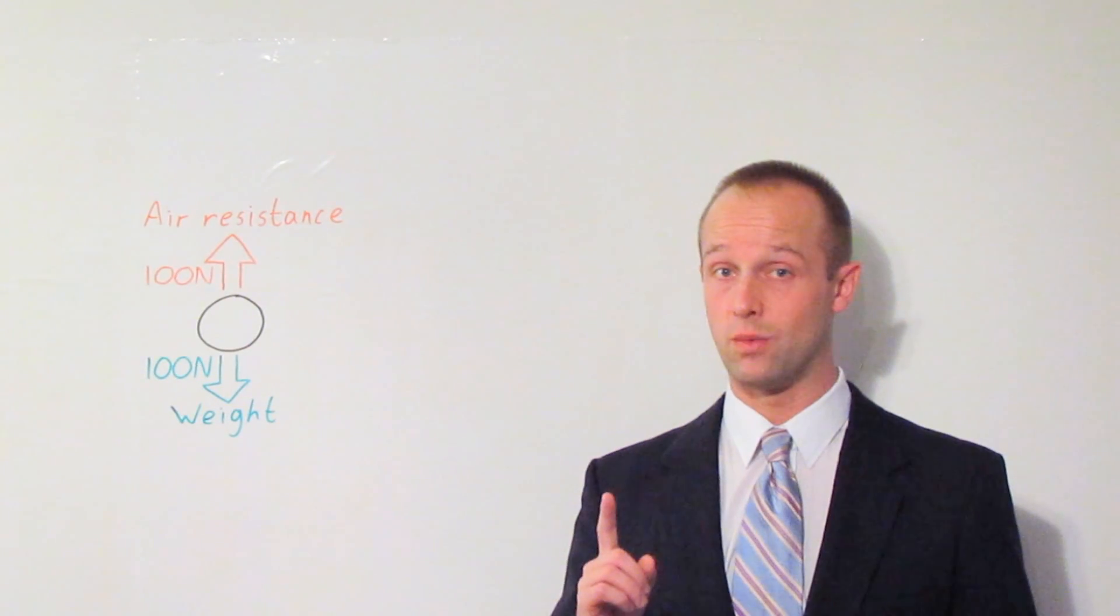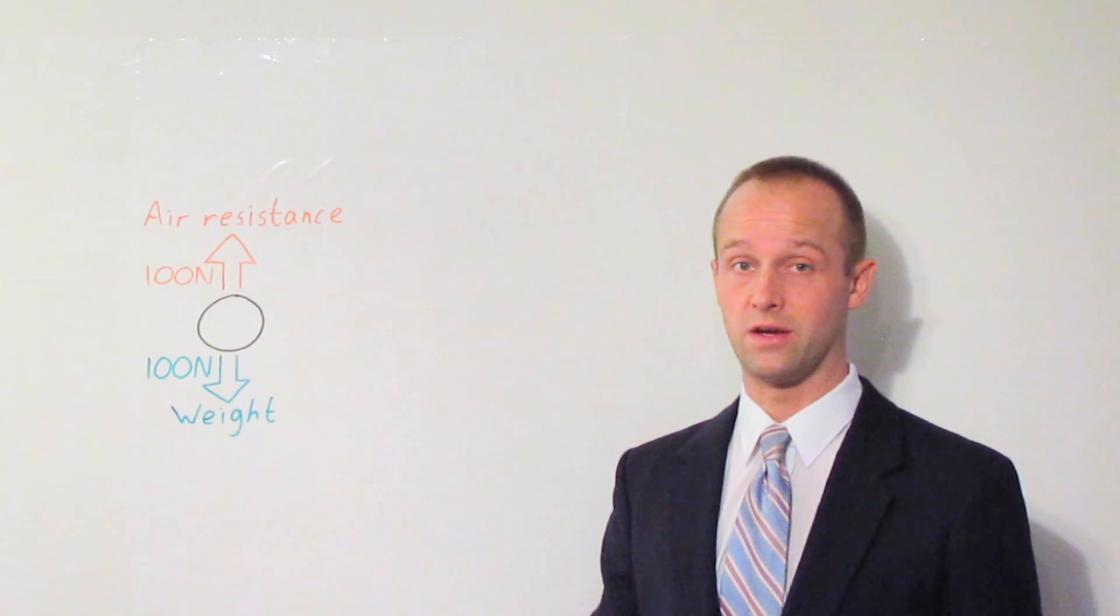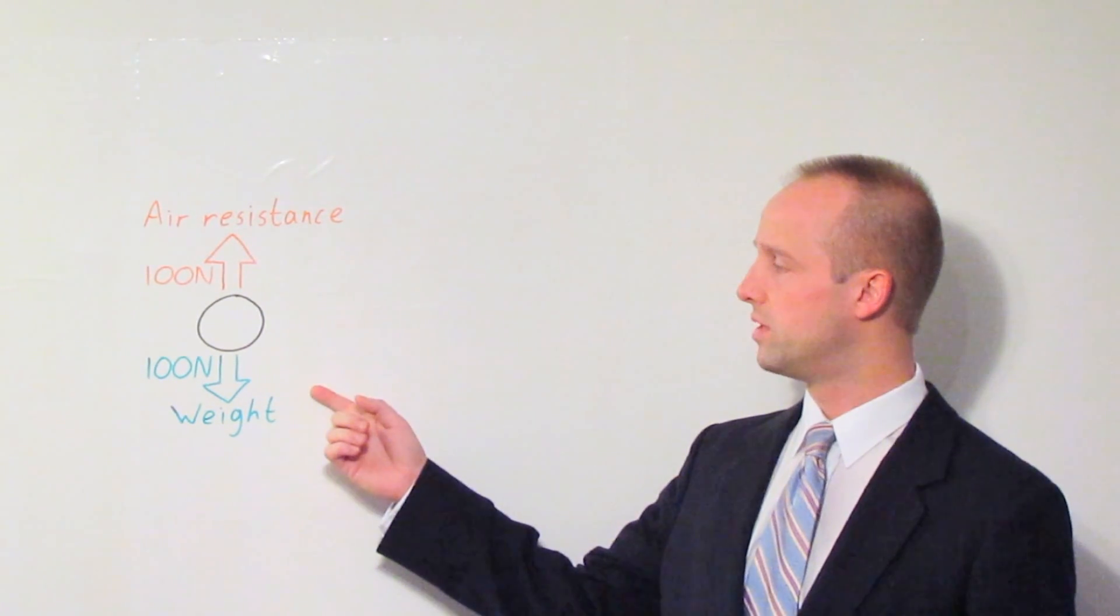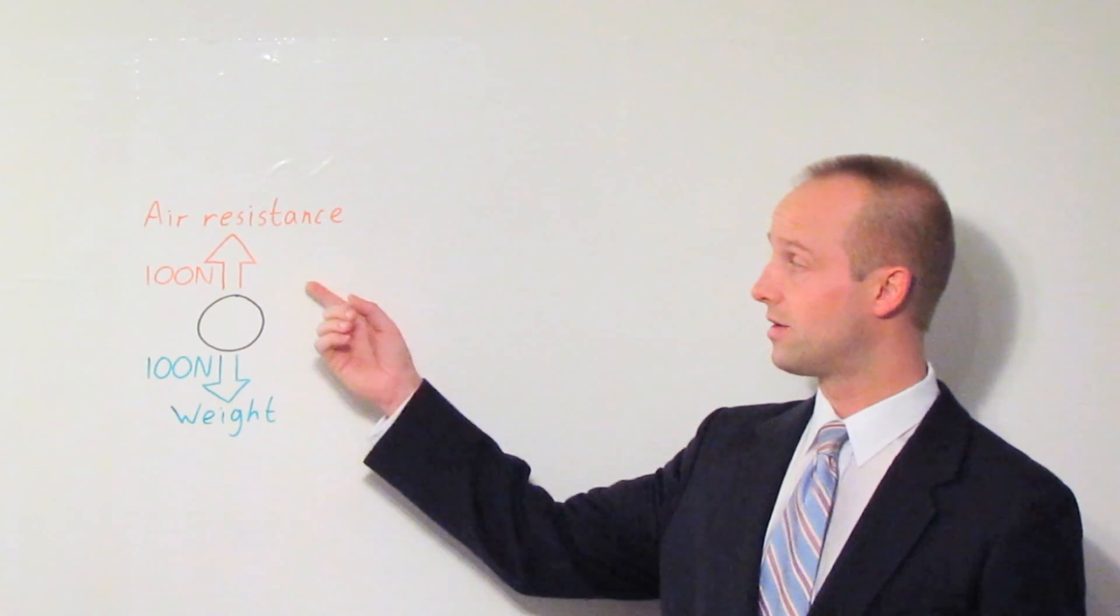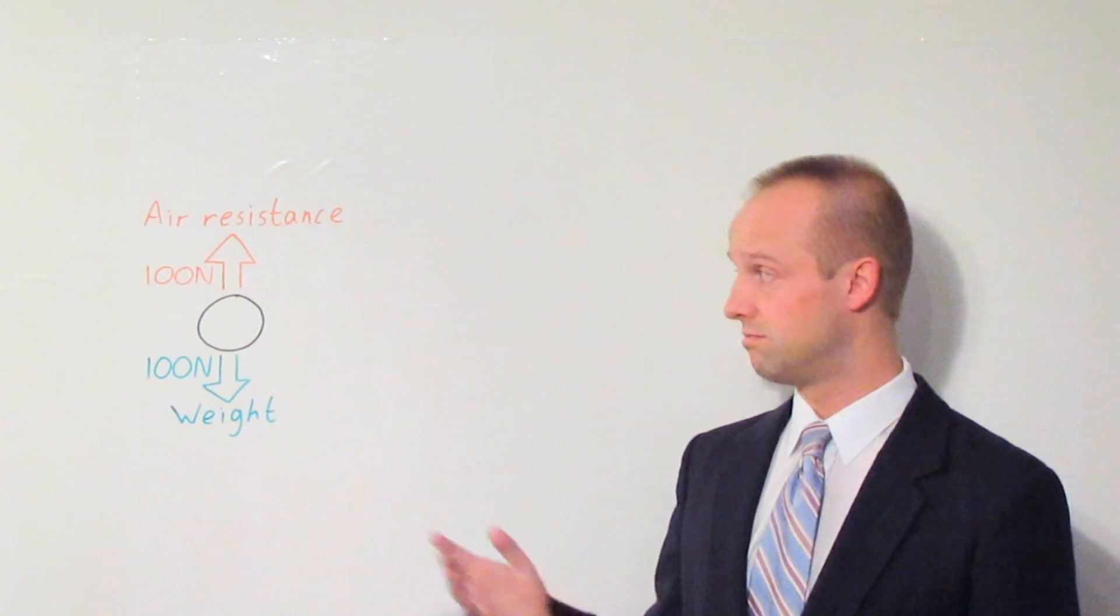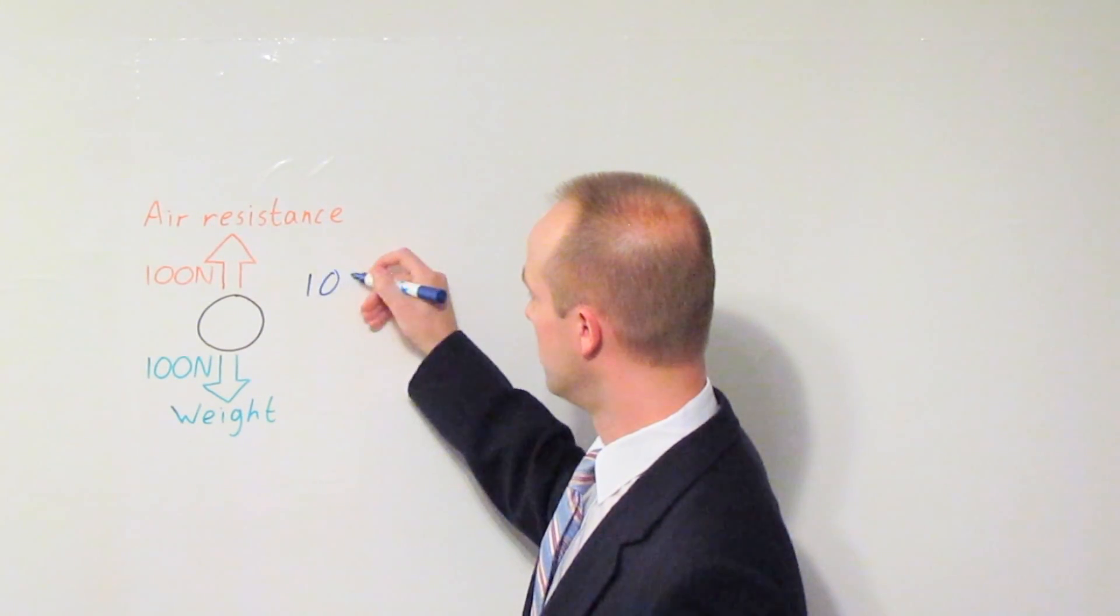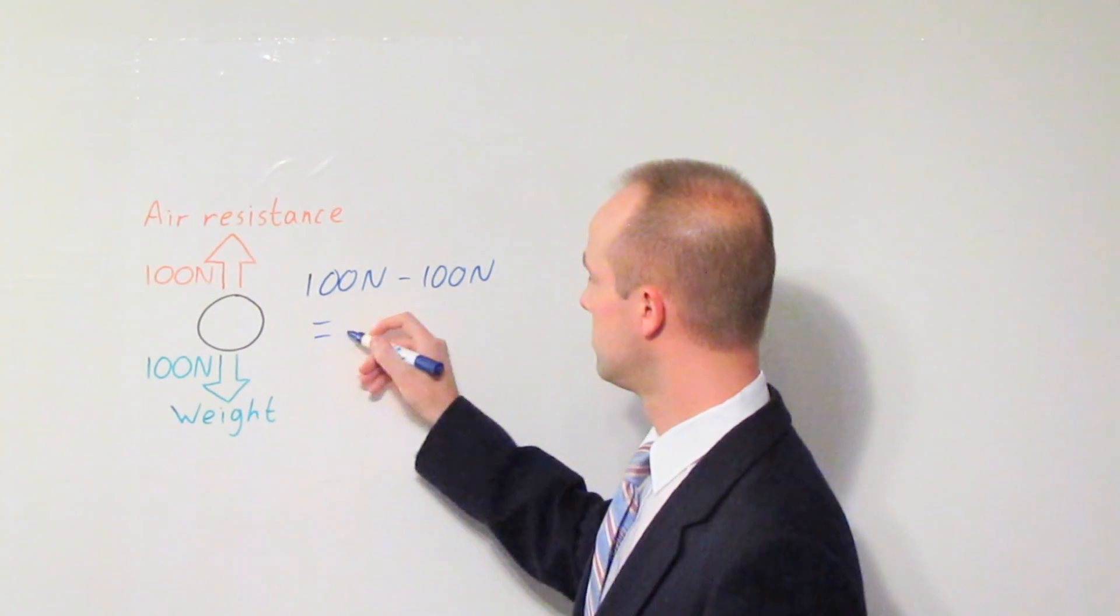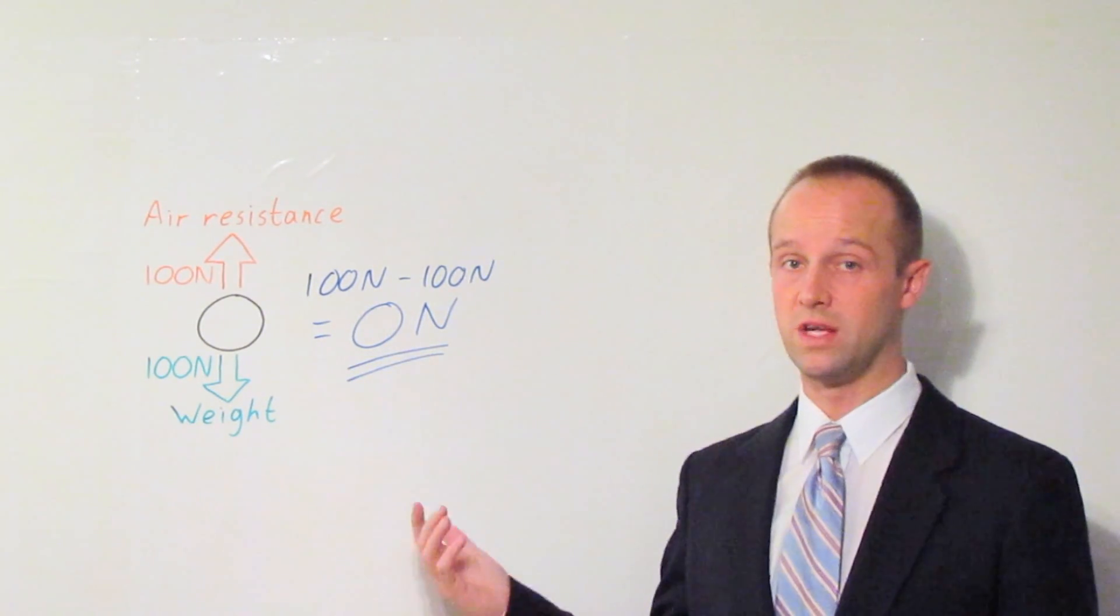Now there is one special case which you need to be aware of. And that is when you've got an object which has two equal and opposite forces acting on it. So let's say that we've got a ball here and it's got a weight of 100 newtons. That weight is causing it to fall through the air and it's falling so quickly that it's now got an air resistance of 100 newtons. Under these circumstances exactly what you might think would happen does happen. The resultant force is 100 newtons minus 100 newtons, which gives you a resultant force of zero newtons.